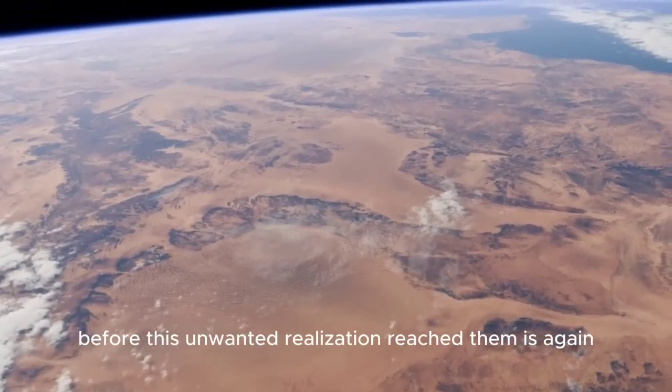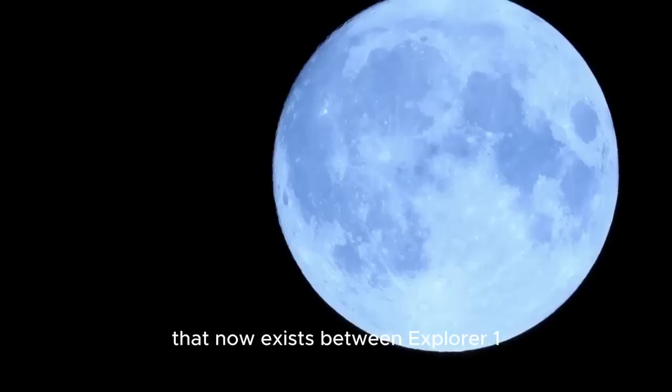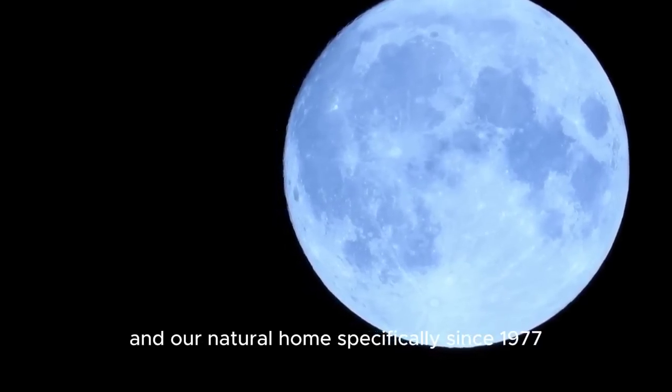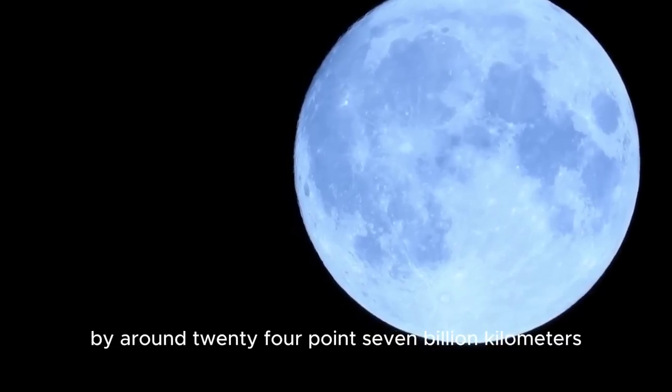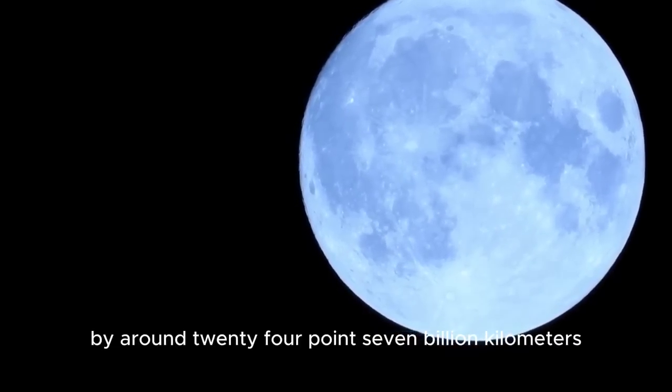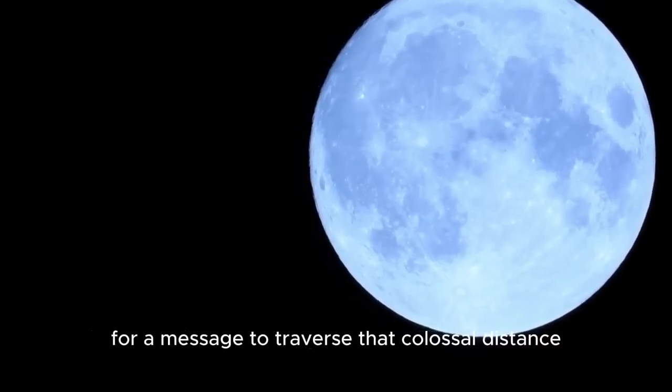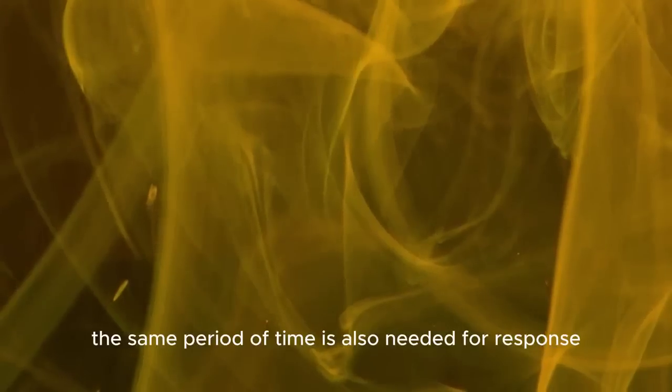The fact that the scientists had to wait 46 hours before this unwanted realization reached them is due to the enormous distance that now exists between Explorer One and Earth. Since 1977, the probe has been separated from Earth by around 24.7 billion kilometers, and it takes almost 23 hours for a message to traverse that colossal distance. The same period of time is also needed for a response.